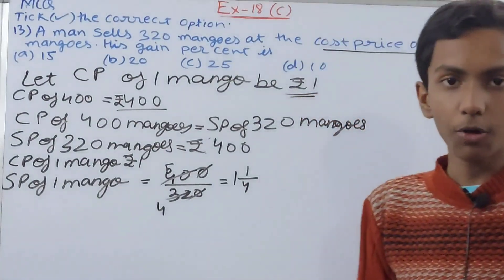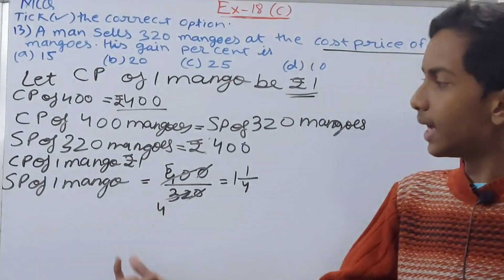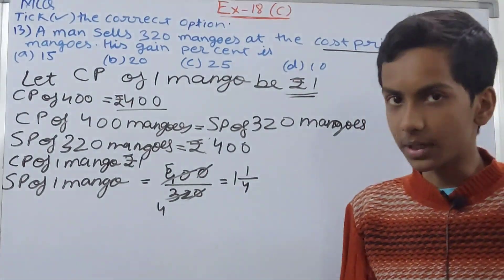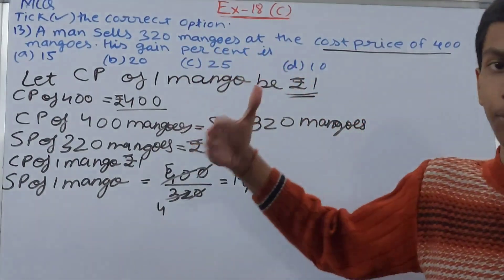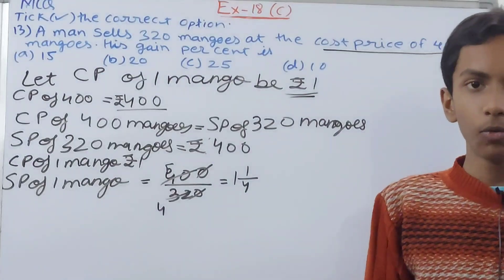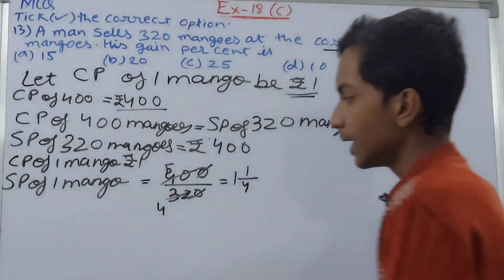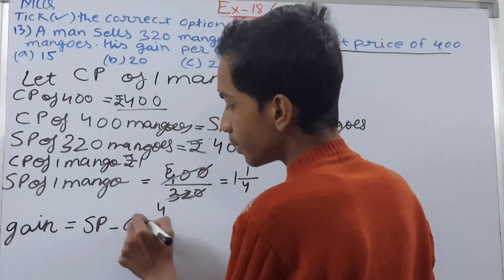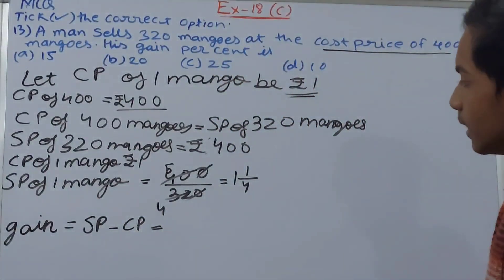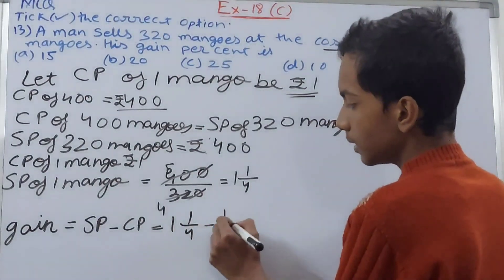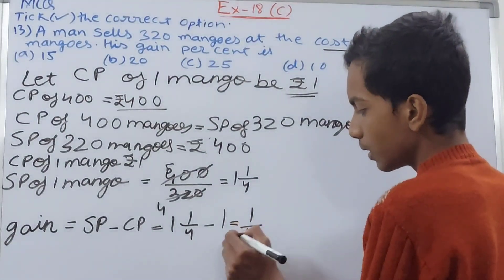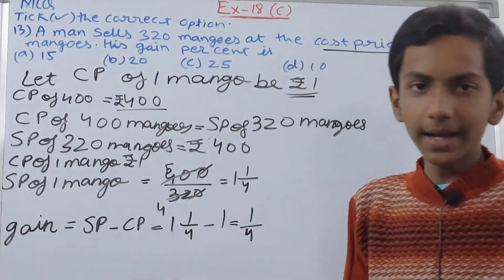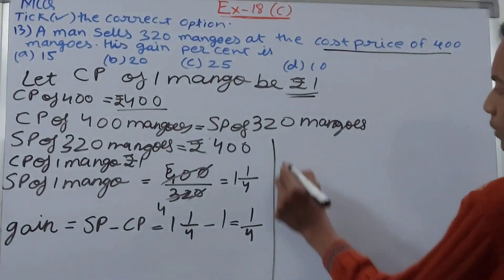Clearly there is profit, because the cost price is ₹1 and the selling price is more than ₹1. Whenever the selling price is greater than the cost price, there is profit. To find the gain percent, we first find the gain: Gain = SP − CP = 1¼ − 1 = 1/4.